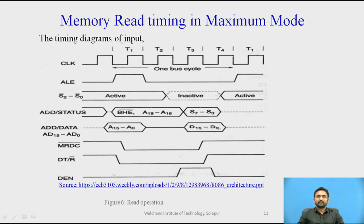Here you can observe the timing diagram of the memory or I/O read cycle without any wait states in maximum mode. The status bits S0, S1, S2 are set just prior to the beginning of the bus cycle upon detecting a change from the passive state. The 8288 outputs a pulse on its GTR pin during T1. In T2, the 8288 sets DEN to 1, enabling the transceiver for memory read operation and activating the memory read cycle, which is maintained until the end of clock period T4. For the I/O read cycle, the control signal IORC is activated instead.